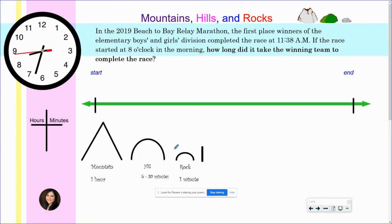A mountain represents one hour. A hill represents any time between 5 and 30 minutes. And a rock represents one minute.